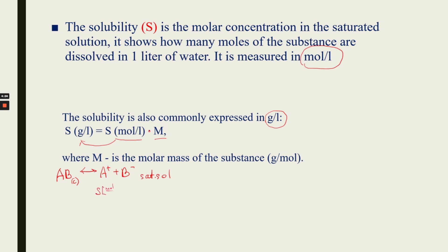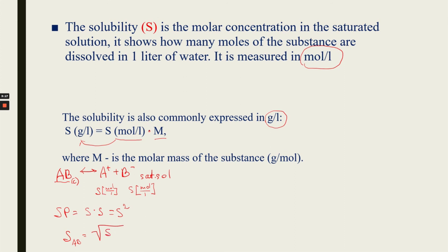In that solution the molar concentration of cations and anions equals the solubility S (in mol/L), and these molar concentrations are equal. So the solubility product equals S × S = S². We can rearrange: for substances like AB, the solubility S is the square root of the solubility product.